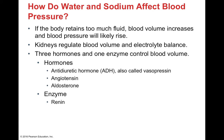Water and sodium directly affect blood pressure. If the body holds on to too much fluid, blood volume increases and blood pressure rises — because where sodium goes, water follows. High sodium concentrations cause water to cross membranes toward those regions. Specialty organs like the kidneys help regulate blood volume and electrolyte balance to maintain water homeostasis. There are three main hormones and one main enzyme involved in controlling blood volume.